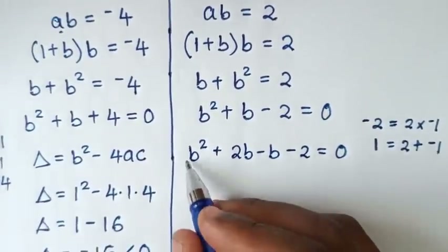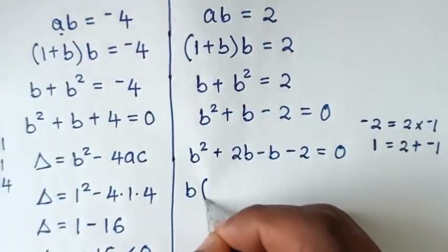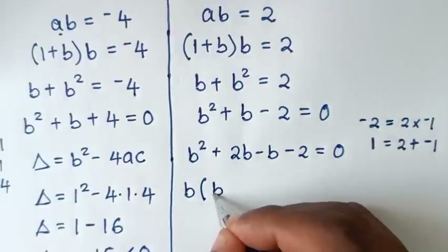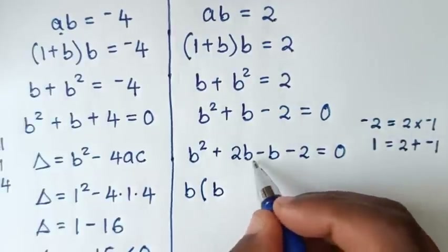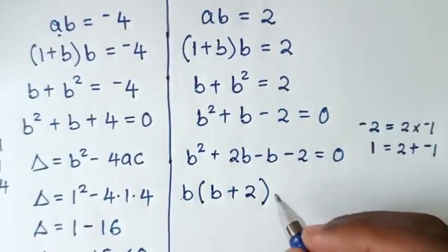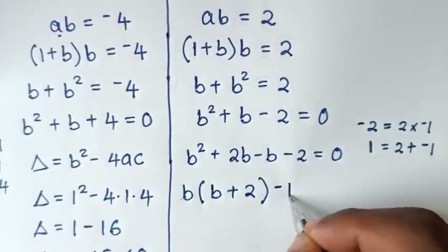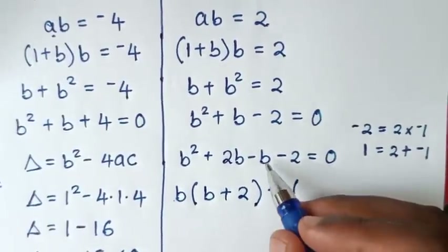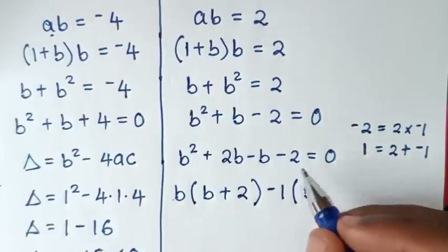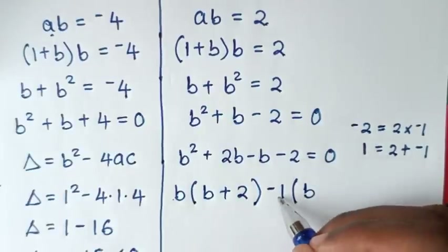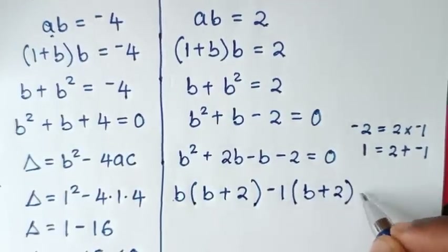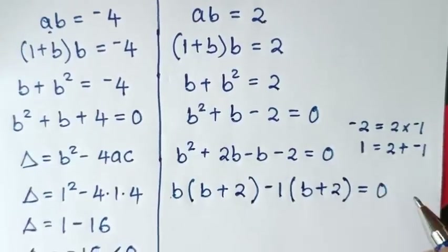Then from here, b is common in the first two terms, so we take b out of the bracket: b squared divided by b is b, and 2b divided by b is 2, giving b(b+2). Then from the remaining terms, we take -1 out: -1(b+2).